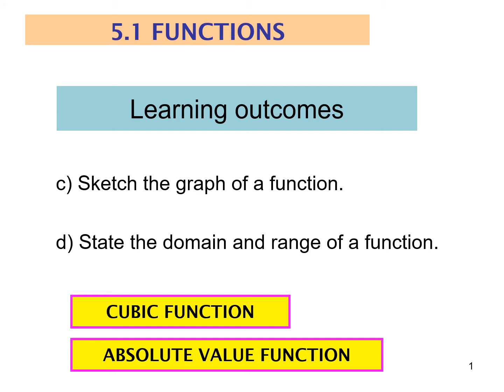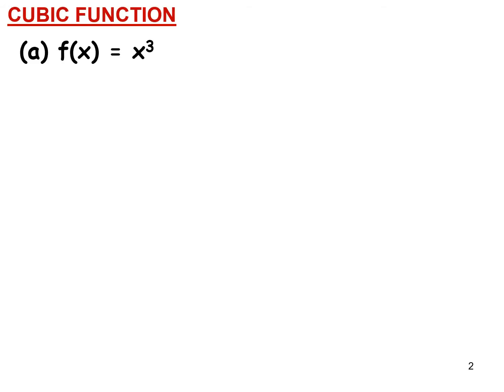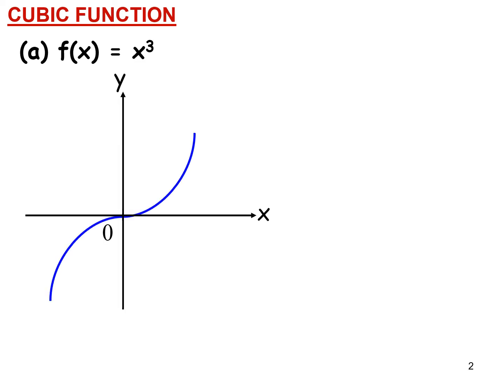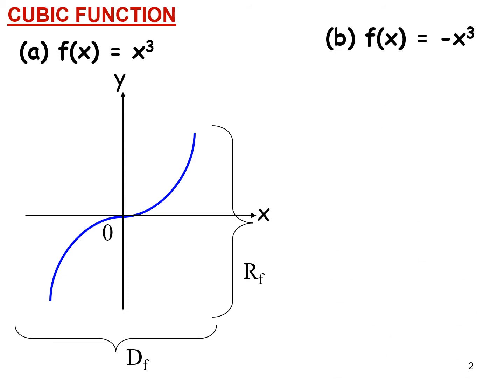For the basic cubic function, f(x) = x³, the shape of the graph shows that both x and y are defined across all values. When x is positive you get y positive, and when x is negative you get y negative. The domain and range are both all real numbers, from negative infinity to infinity.